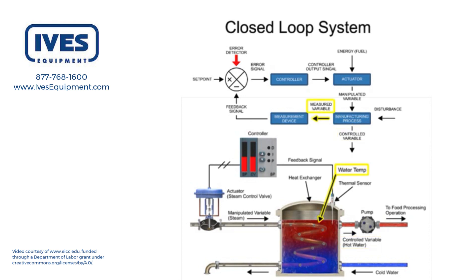The measured variable monitors the status of the controlled variable. Water temperature is the measured variable in the process. The measurement device senses the measured variable and produces an output signal that represents the status of the controlled variable. The thermal sensor that measures the water temperature in the heat exchanger is the measurement device.